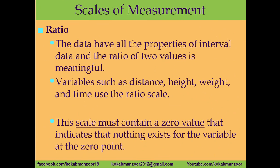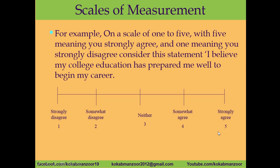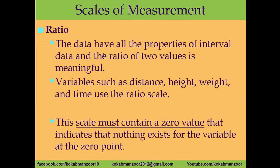The ratio scale has all the properties of interval, ordinal, and nominal scales combined. The most important element is that it must contain a true zero value indicating nothing exists for the variable at the zero point. Ratio scale data includes height, weight, income, salaries, sales, and profitability. The numbers are real — if your height is five feet, it means five feet; if your weight is 80 pounds, it truly means 80 pounds.